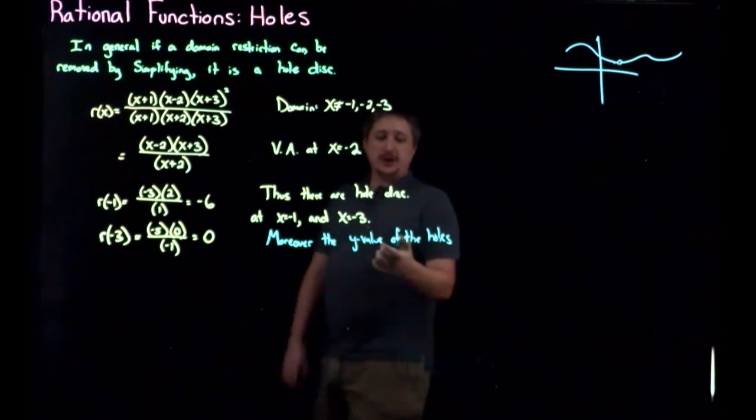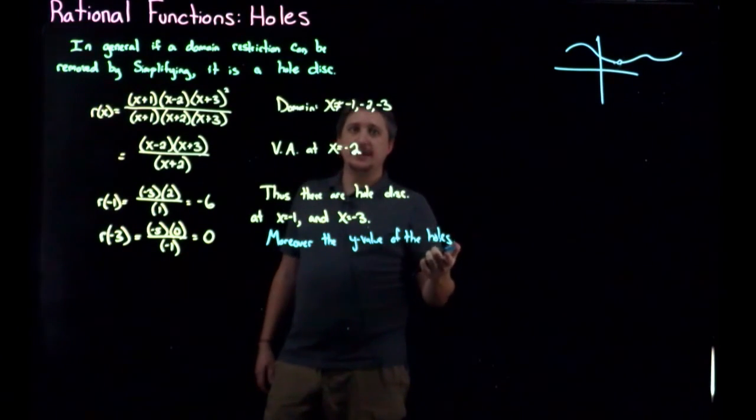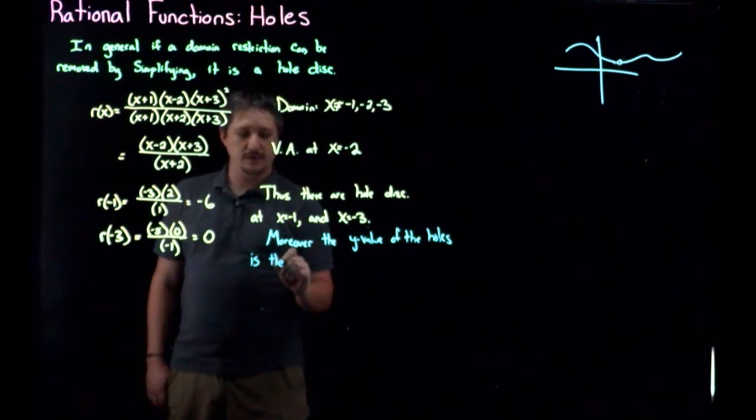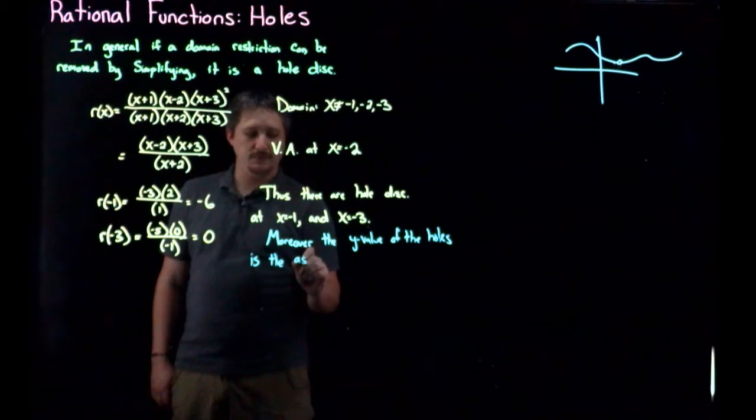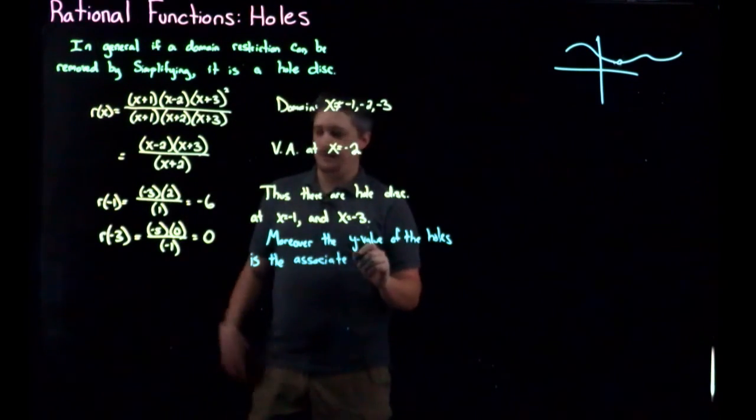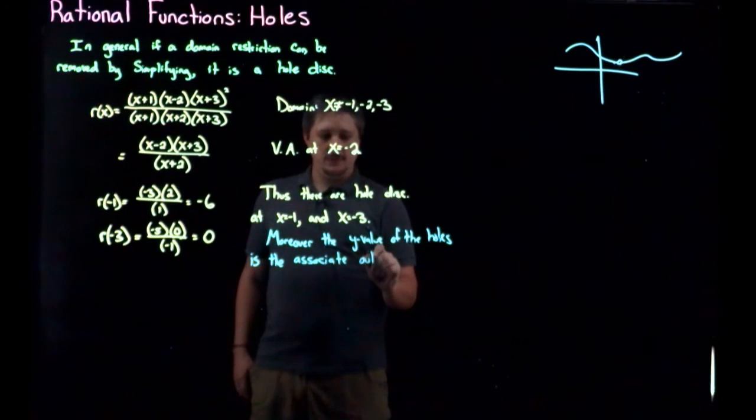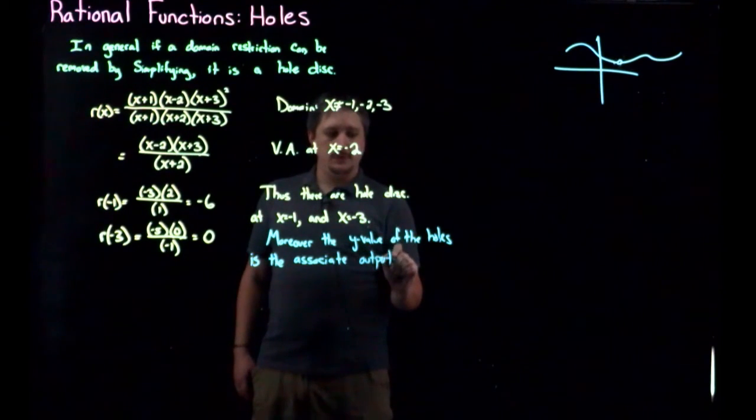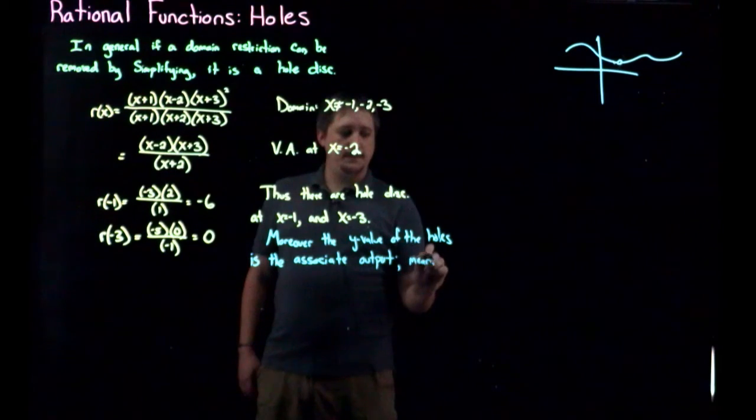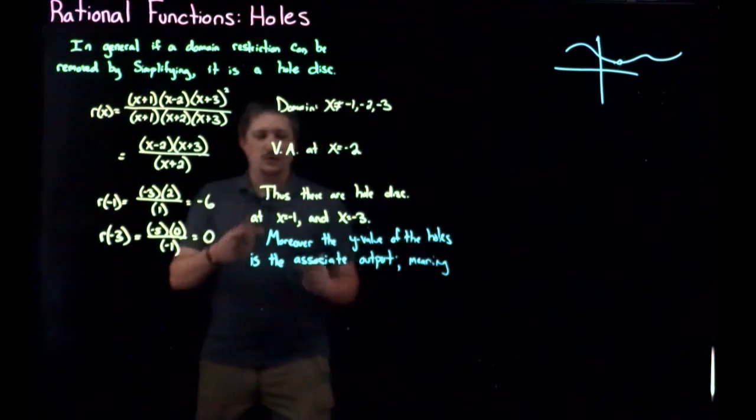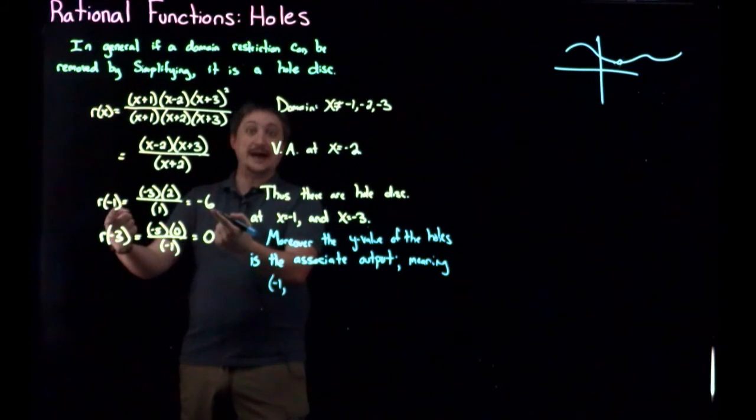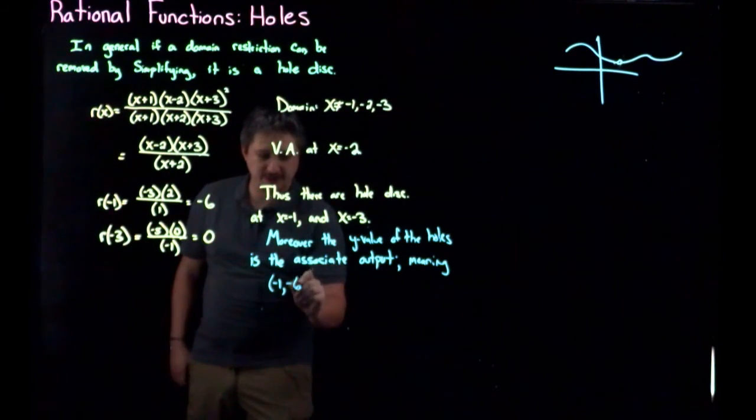So a hole discontinuity has the x value just like an asymptote, but it also has a y value because it is a missing point. And so it makes sense to talk about the y value of the hole. And the y value of the hole is the associated output,